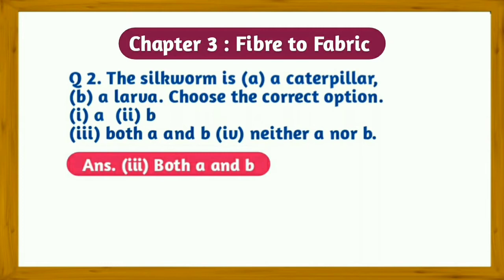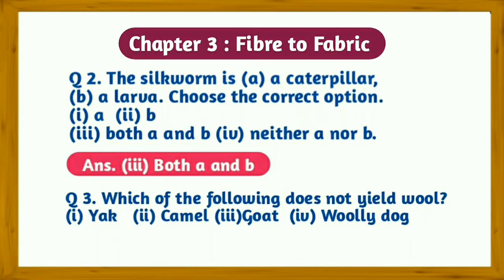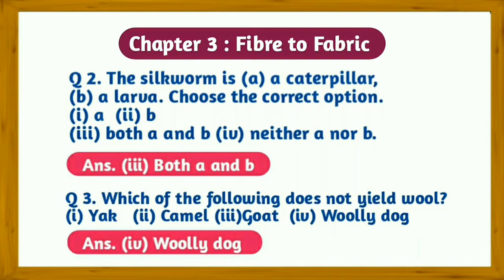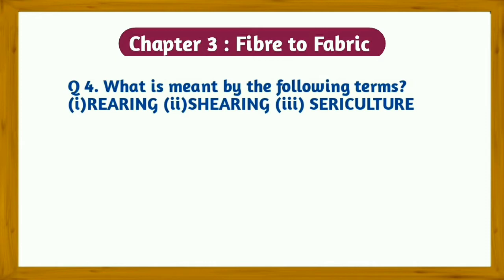Question number three: Which of the following does not yield wool? (1) Yak, (2) Camel, (3) Goat, (4) Woolly dog. The correct answer is fourth — woolly dog.